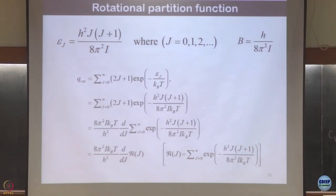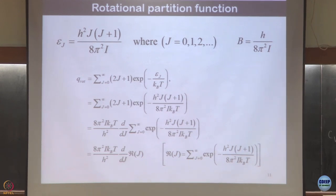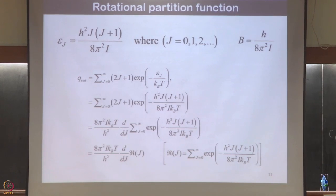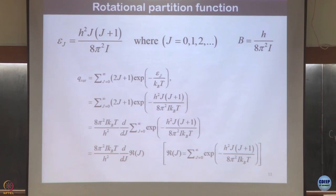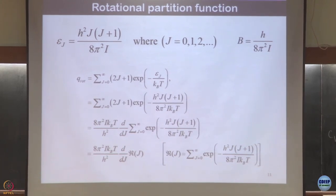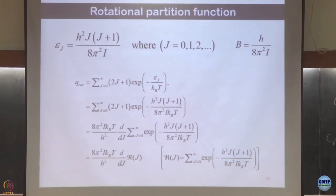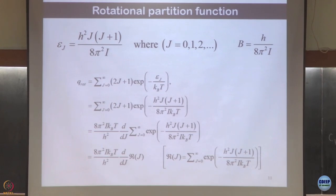Vibration is done. We are now going to go to rotation. The game we play: we have a diatomic which is rotating, and then we go and solve the Schrödinger equation assuming a rigid rotator — the rigid rotator of quantum mechanics.